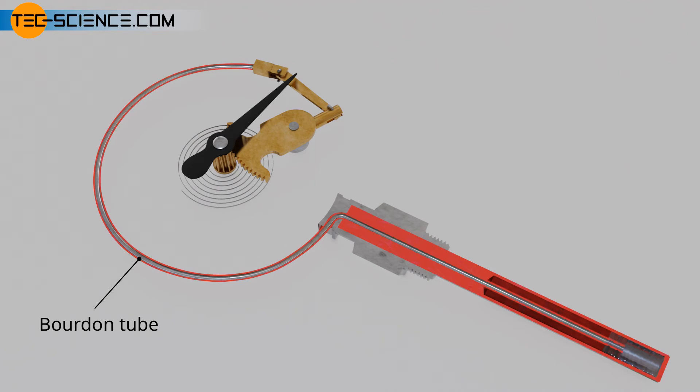Conversely, a drop in temperature causes part of the gaseous vapor to condense and the vapor pressure to decrease. The indicated temperature decreases.